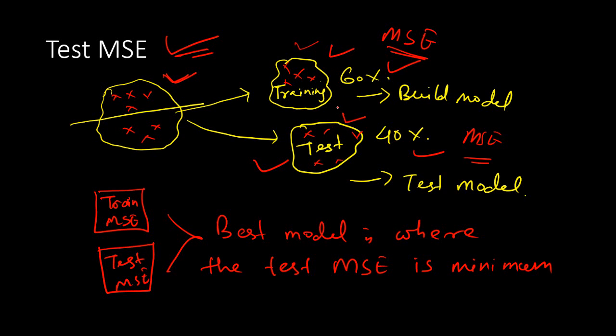The purpose of building a model is that we want the model to work in test data set or in new environment. Because when the model is going to get implemented in the real life scenario, it is going to work on completely new scenario, which is totally unknown.